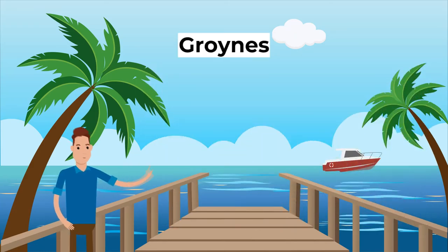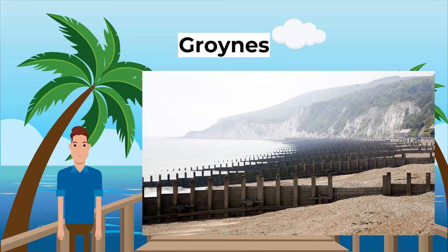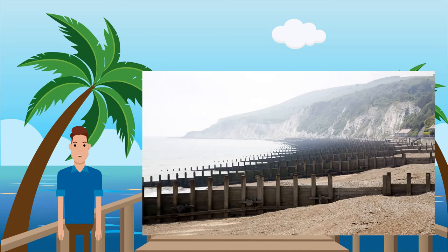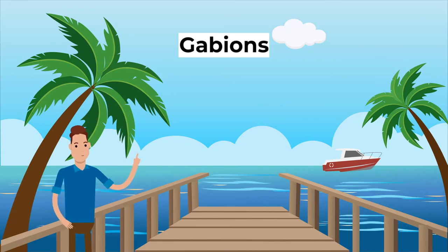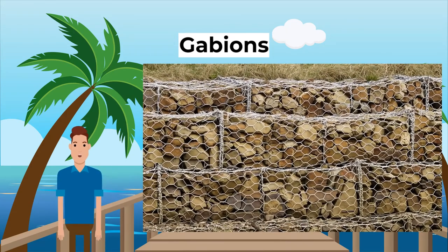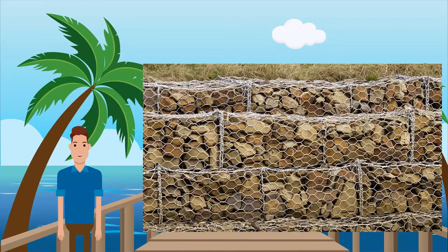Next, groins: a groin is a wooden barrier built at right angles to the beach. The advantages are that they prevent longshore drift from moving beach material along the coast and allow the build-up of a beach — beaches being a natural defence against erosion and an attraction for tourists. The disadvantages are that they can be unattractive and costly to build and maintain. Finally, gabions: large boulders piled up on the beach in steel cages. The advantages are that they absorb the energy of waves and allow the build-up of a beach. The disadvantages are that they can be expensive to obtain and transport, and can look unattractive.